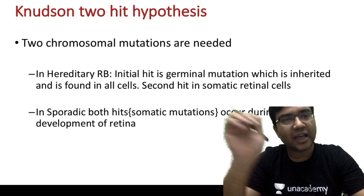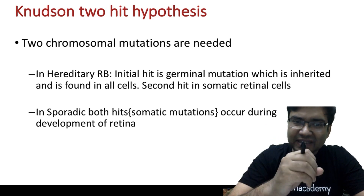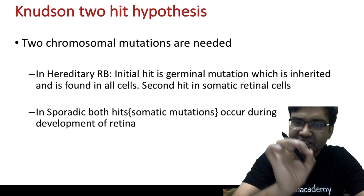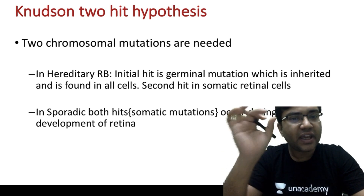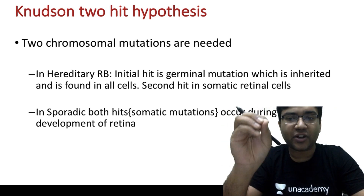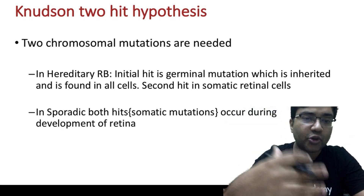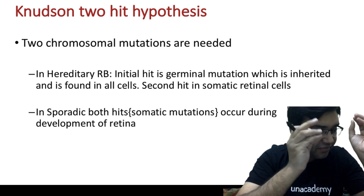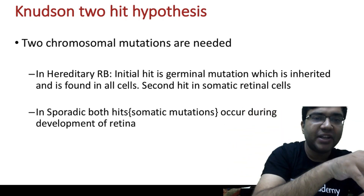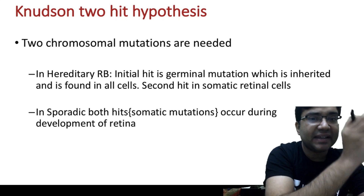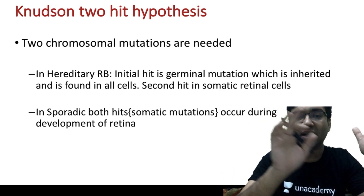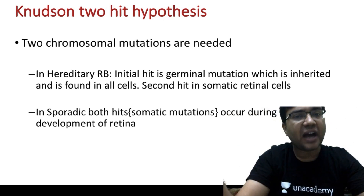The two-hit hypothesis in retinoblastoma: there are two types — hereditary and sporadic. In hereditary retinoblastoma, the initial hit is a germline mutation that is inherited, and the second hit occurs in somatic retinal cells. In sporadic retinoblastoma, both mutations occur during the development of the retina — both are acquired after birth.